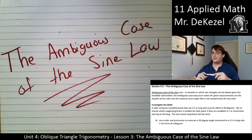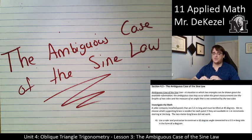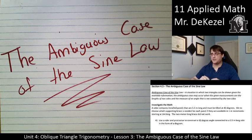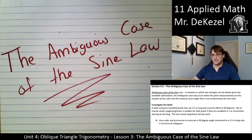Let's get going with this definition. The ambiguous case of the sine law is a situation in which two triangles can be drawn given the information that you have. This occurs when you are given the lengths of two sides and the measure of an angle, and the measure of the angle is not between the two sides — it is not contained by the two sides. This will make sense as we move along.